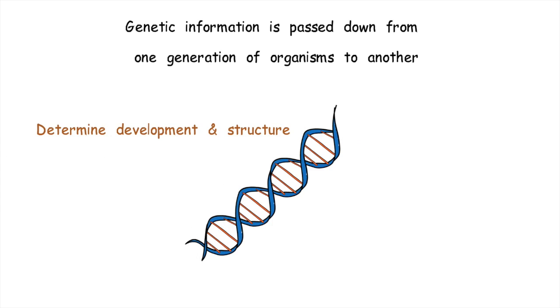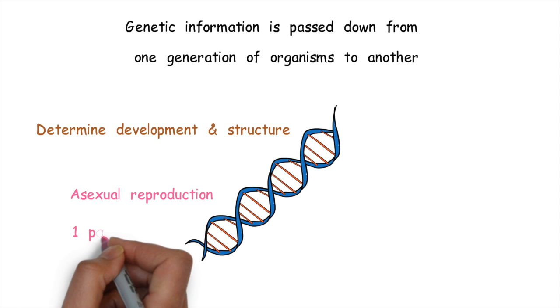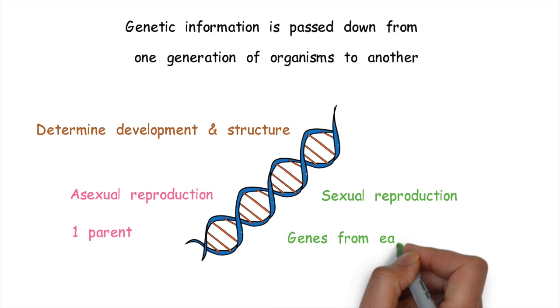In asexual reproduction, all the genes in the offspring come from one parent. In sexual reproduction, half of the genes come from each parent.